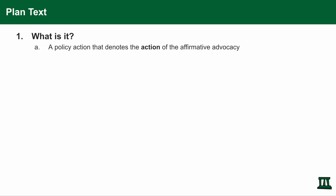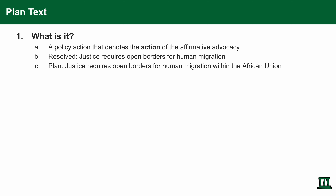First, let's talk about the plan text in circuit debate. A plan text denotes a policy action that denotes the action of the affirmative advocacy. For example, in a resolution where it says 'resolved justice requires open borders for human migration,' a policy affirmative plan might read: 'justice requires open borders for human migration within the African Union.' A plan is essentially a policy action that is going to be fiated, or essentially carried out, in the affirmative speech.